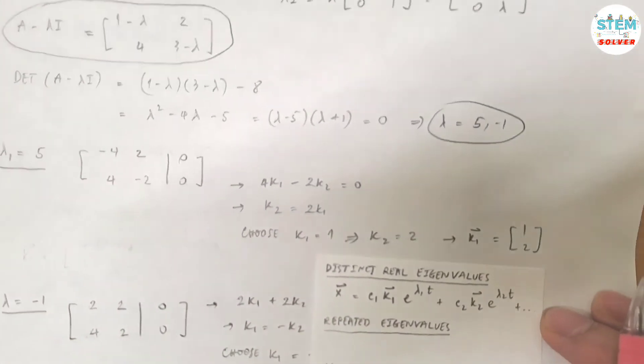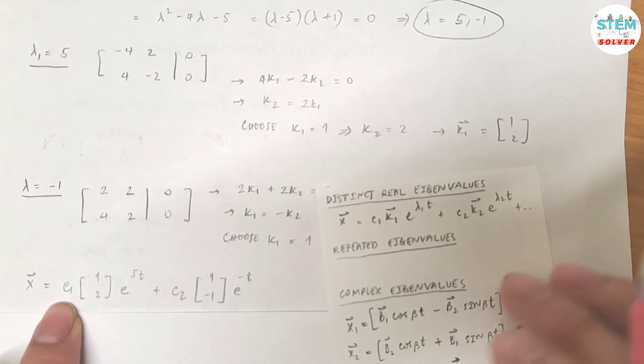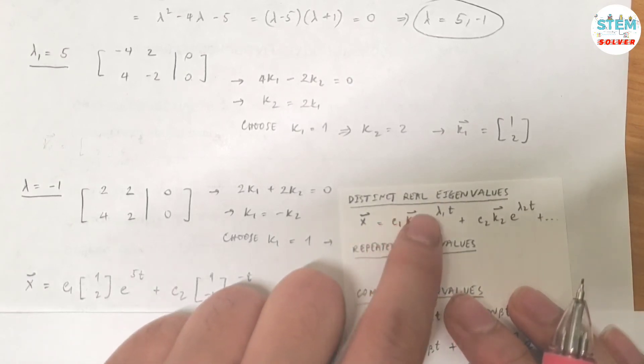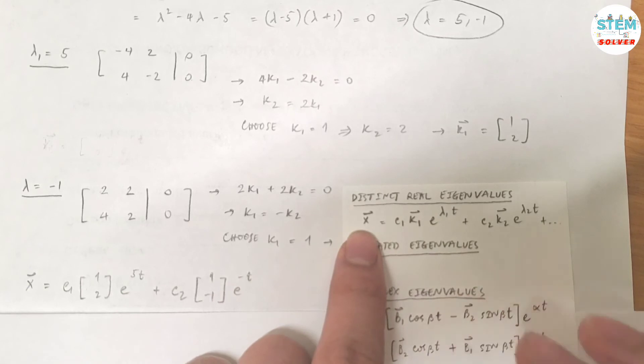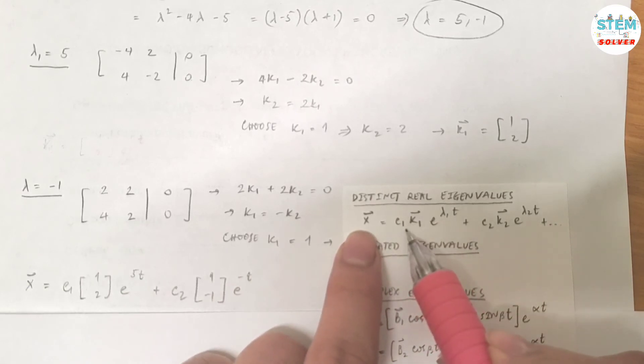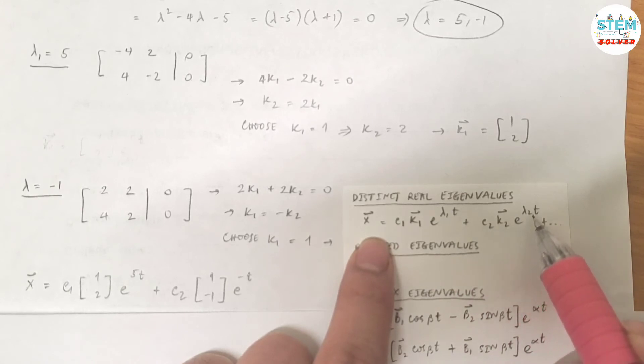So here's your final solution. Because you have distinct real eigenvalues, your final solution will be written in this form: C1 k1 e^(lambda_1 t) plus C2 k2 e^(lambda_2 t) plus all the way.